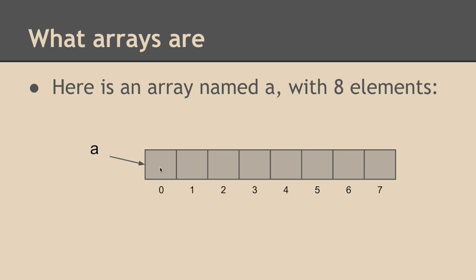So the contiguous part means that all of these are right next to each other. There's no memory in between them. This whole chunk from element zero all the way through element seven has been set aside, divided into eight compartments, each of them holding the same type of a thing.